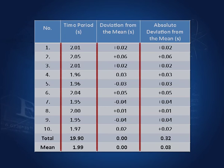Here I have before you 10 observations of the time period of a pendulum whose length is 100 centimeters. The first column is the observation number, the second column is time period in seconds, the third column is deviation from the mean, and the fourth column is absolute deviation from the mean — all numbers positive. The mean time period is 1.99 seconds. If we sum all the deviations, you get 0, as I have been saying.